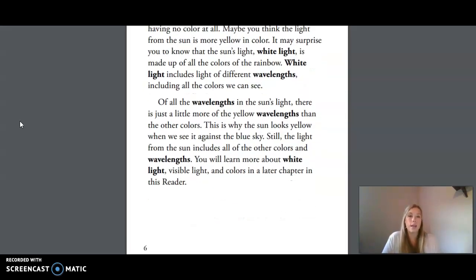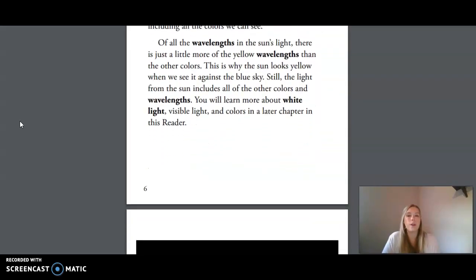Of all the wavelengths in the sun's light, there is just a little more of the yellow wavelengths than the other colors. This is why the sun looks yellow when we see it against the blue sky. Still, the light from the sun includes all of the other colors and wavelengths. You will learn more about white light, visible light, and colors in a later chapter in this reader.